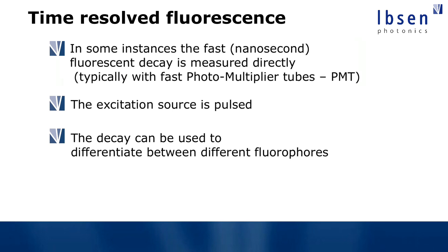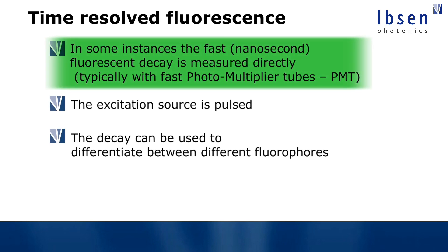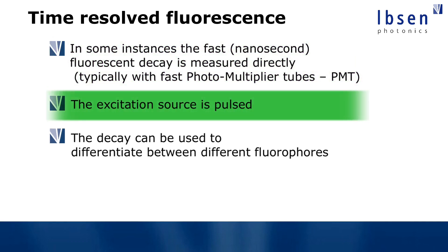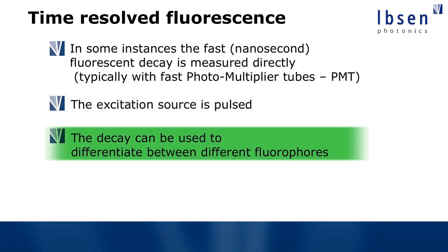If you work with fluorophores that have very very fast fluorescence in the order of nanoseconds, then typically you work with a femtosecond laser — a very short pulse laser — and then you use PMTs and maybe a pump-probe experiment where you can trace the actual decay of the fluorescence from the material. This can give you very very precise information about the fluorophores.